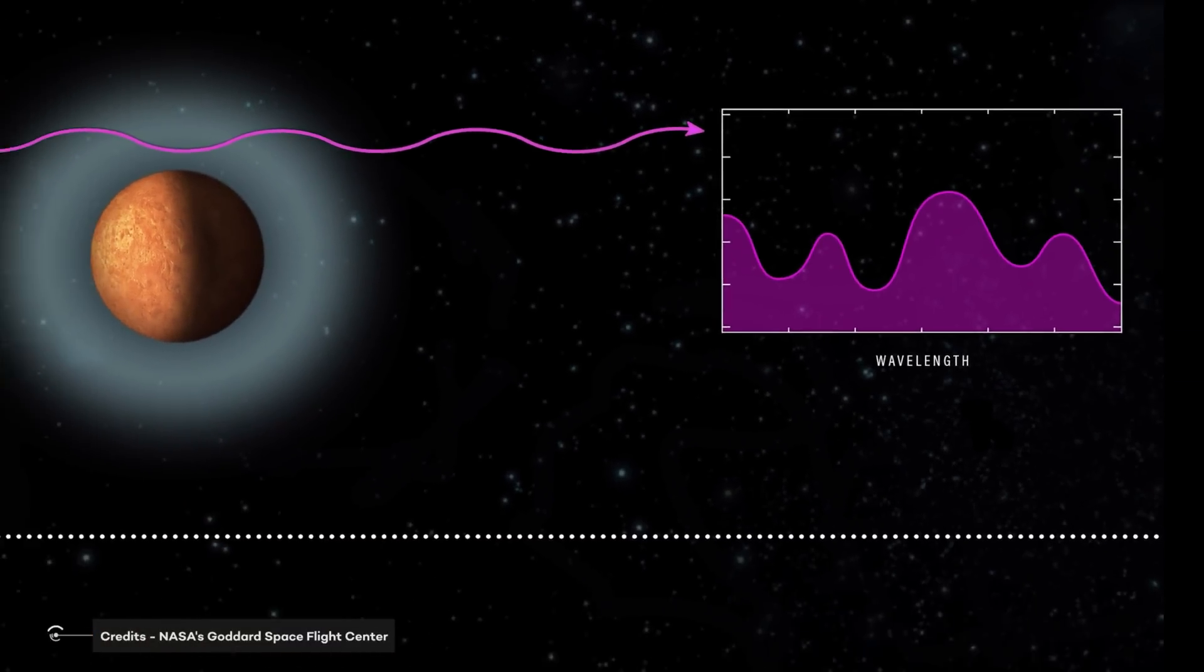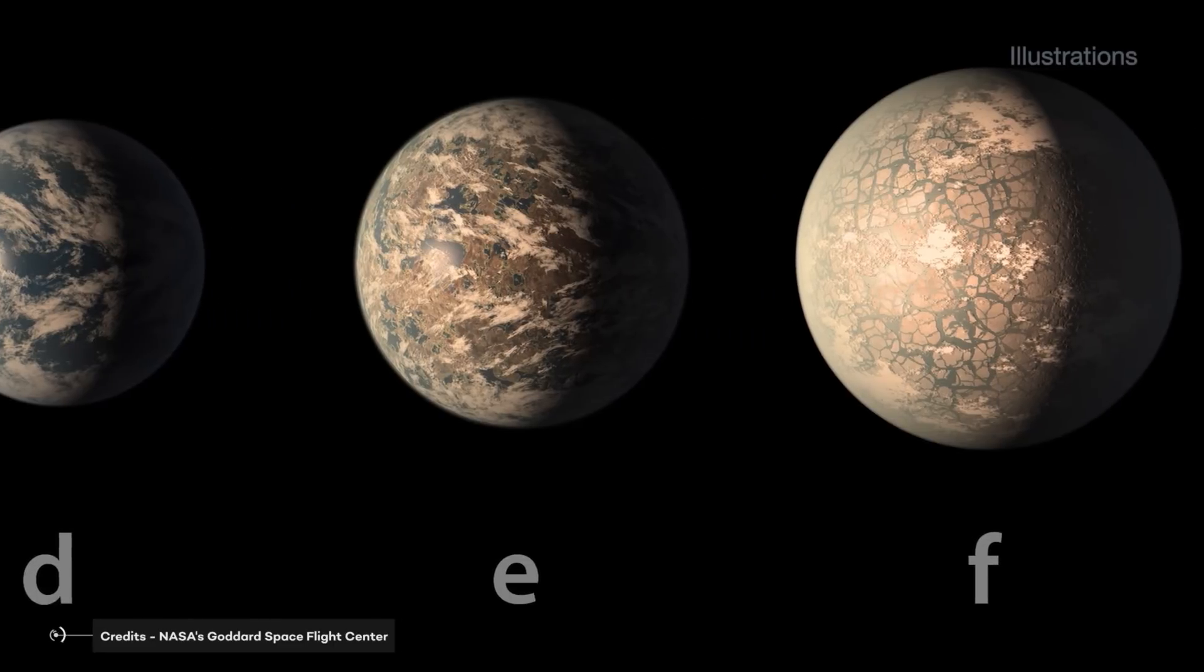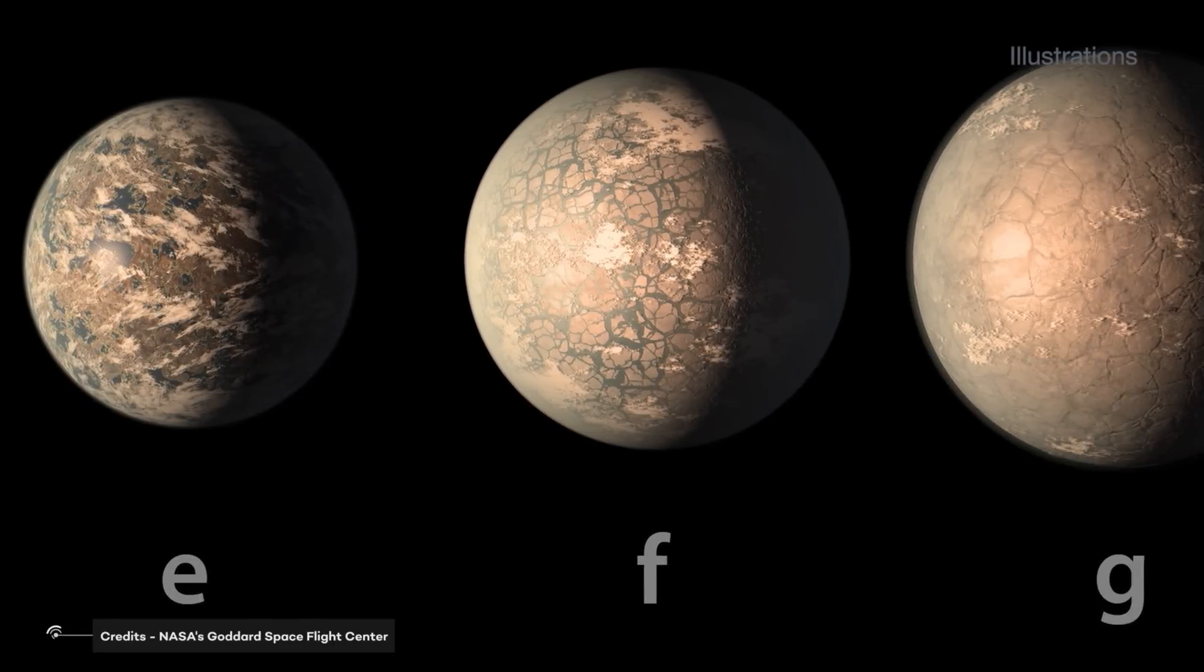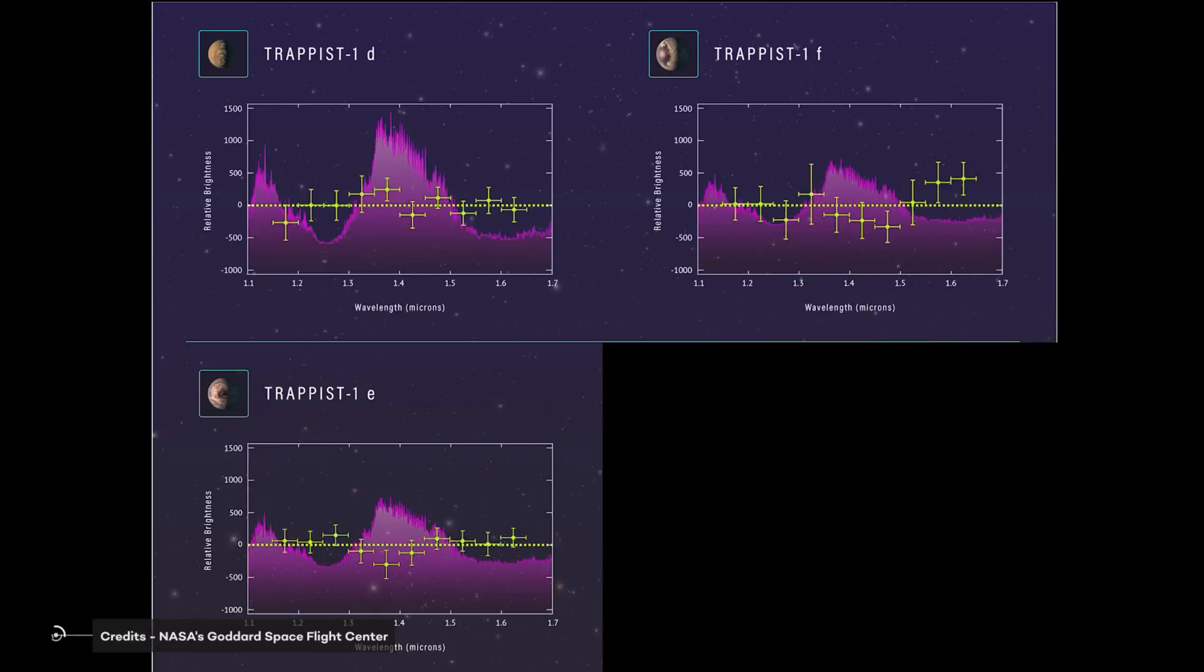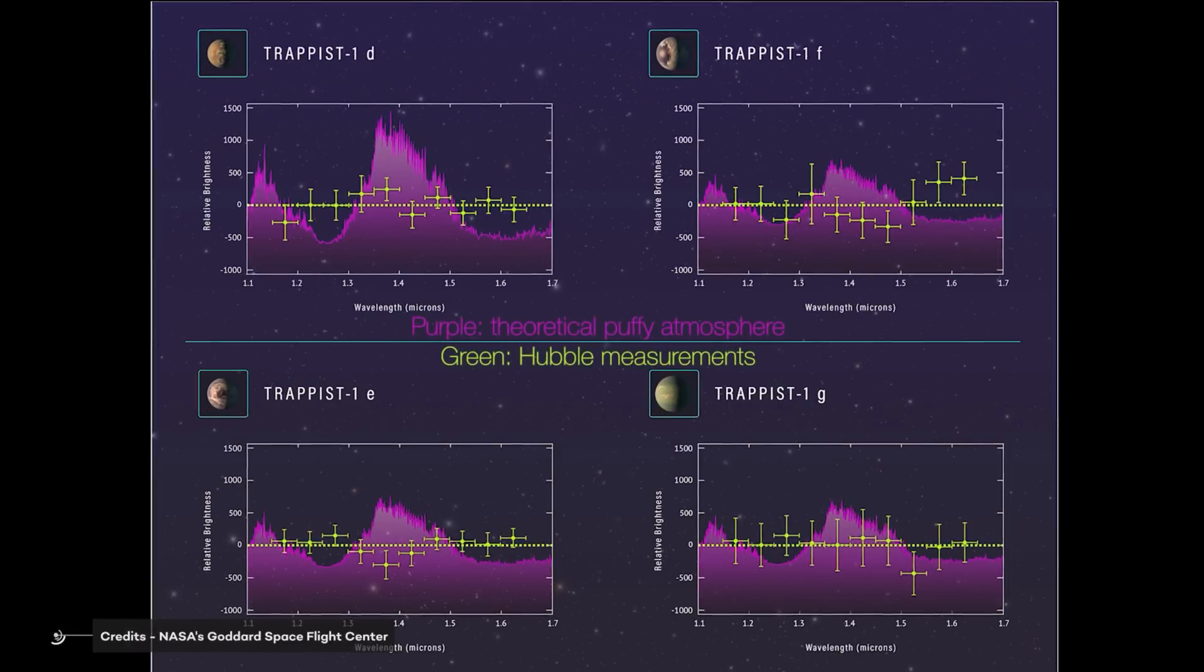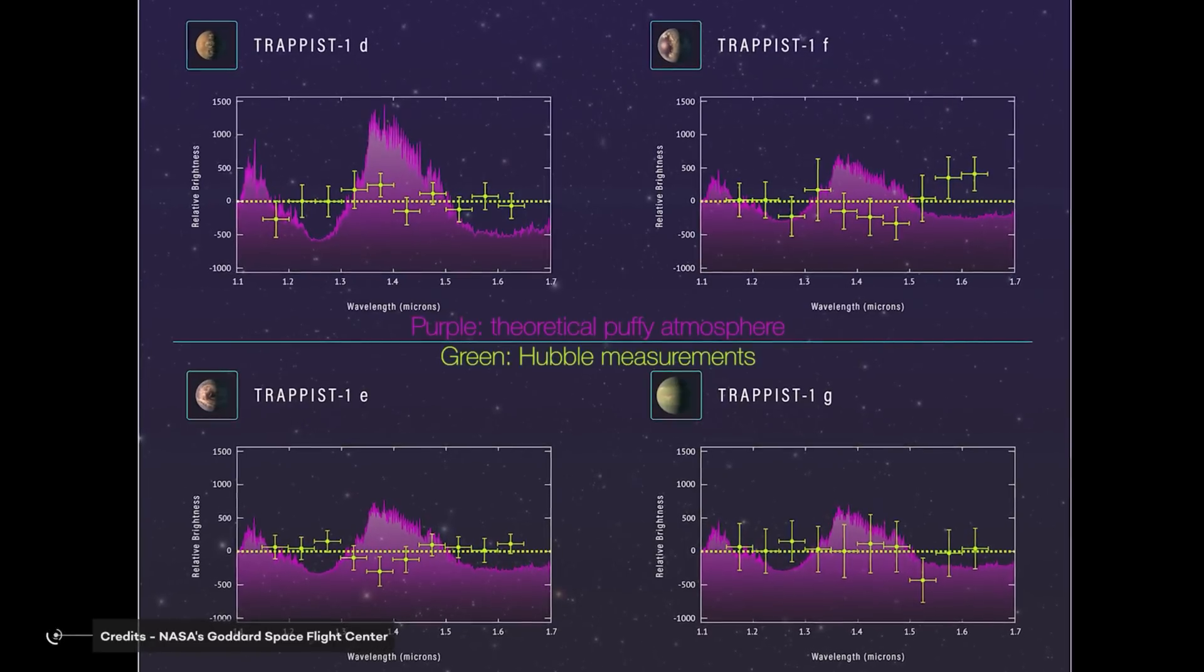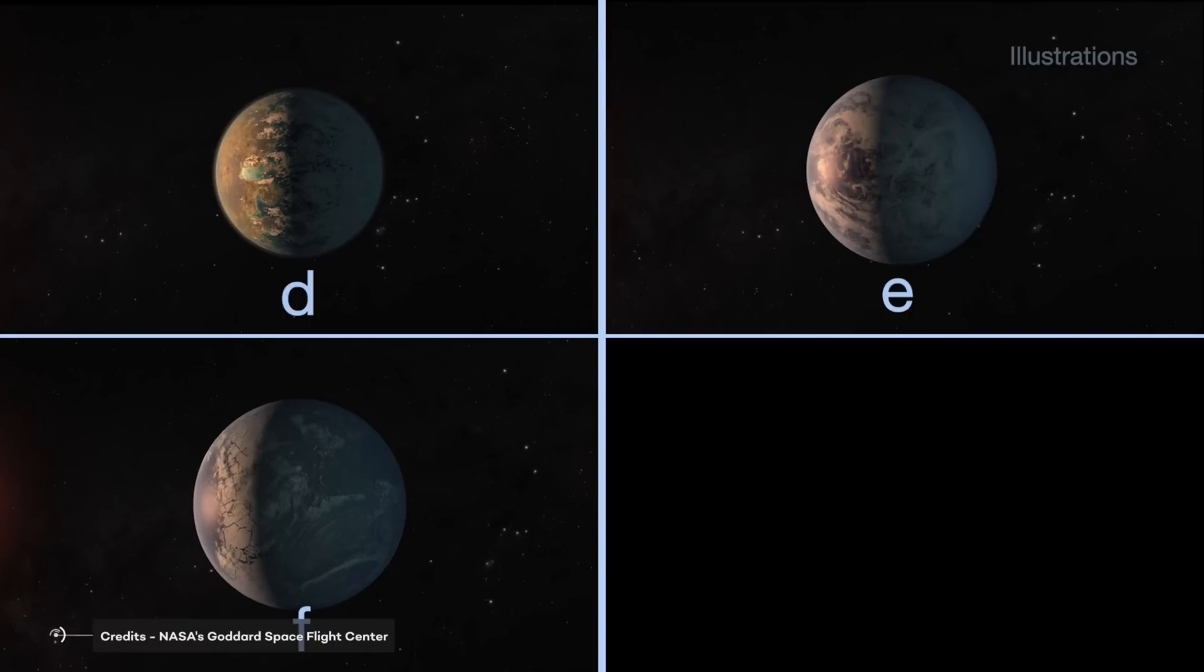Needless to say, this will not be the first time scientists will look for biosignatures. Since TRAPPIST-1's discovery in 2017, scientists have used Hubble to attempt to detect atmospheres around the seven planets. What they found is that the small planets did not have a large, puffy atmosphere for sure, but they were unable to convincingly detect smaller, thinner atmospheres like our own.